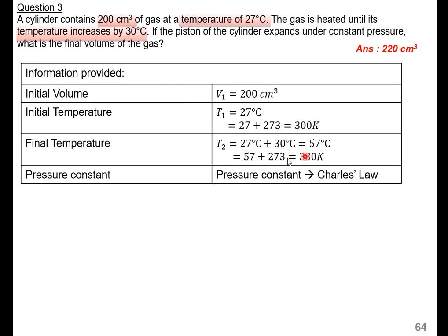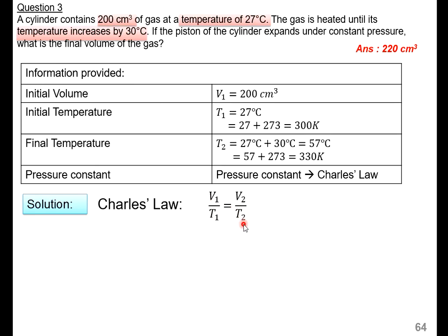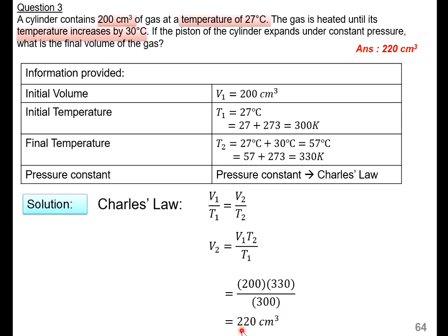Converting T2 to absolute temperature: 57 plus 273 equals 330 Kelvin. It's stated in the question that it is under constant pressure — constant pressure means Charles' Law. Solution using Charles' Law: V1 over T1 equals V2 over T2. We want to find V2, so V2 equals V1 times T2 divided by T1. Substituting: 200 times 330 divided by 300 gives the answer 220 cm³. This is the final volume.